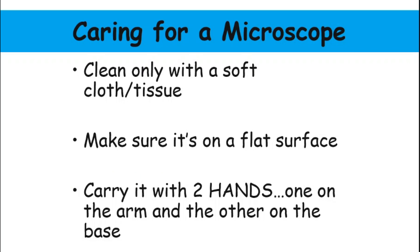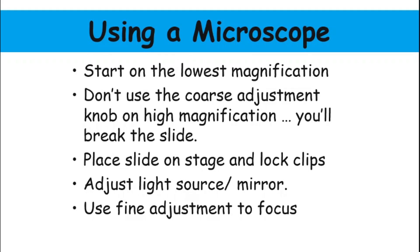For carrying a microscope, clean it only with a soft cloth or tissue and make sure it is on a flat surface. When carrying a microscope, use two hands — one on the arm and the other on the base. If you are going to place a microscope on the table, make sure to place it at the center of the table. When using a microscope, start on the lowest magnification. Do not use the coarse adjustment knob on high magnification because you can break the slide. Place the slide on the stage and lock the clips. Adjust the light source or mirror, then use the fine adjustment knob to focus and achieve a clear image.